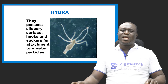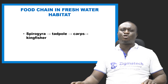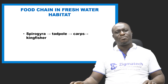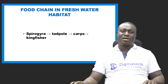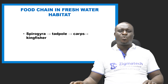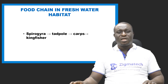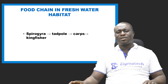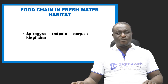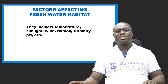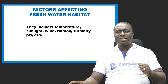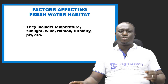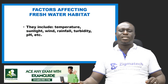Hydra can also be found in freshwater habitats. The food chain in freshwater: spirogyra as producer, tadpole as primary consumer feeding on spirogyra, calves (crayfish) as secondary consumer feeding on tadpole, and kingfisher as tertiary consumer. Factors affecting freshwater habitats include temperature, sunlight, wind, rainfall, turbidity, and pH.